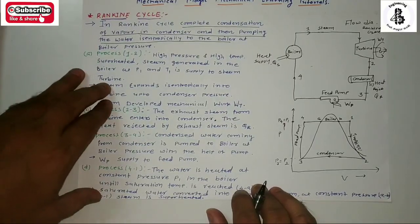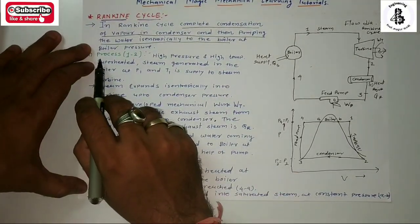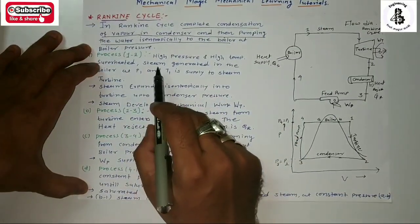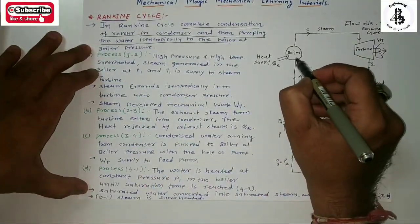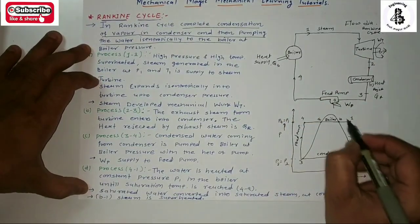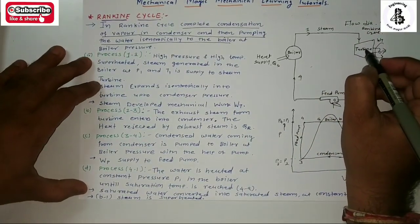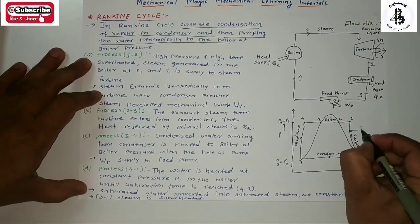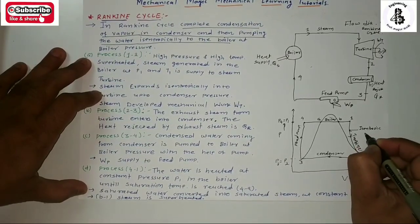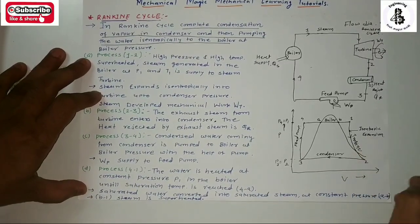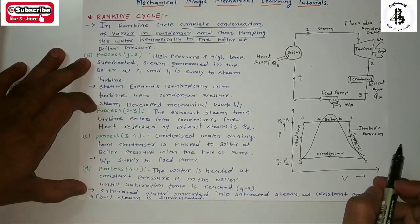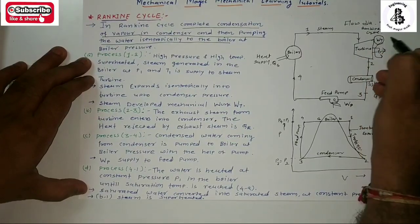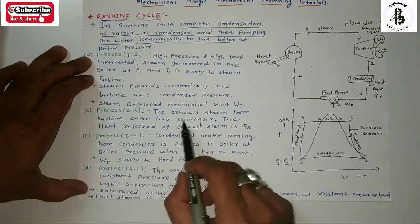In the condenser, the process occurs at constant pressure P3 equal to P2. With the application of the feed pump, the pressure increases. Process 1 to 2: high-pressure, high-temperature superheated steam is generated in the boiler at P1 and T1 and supplied to the turbine, where the steam expands isentropically down to the condensation pressure, developing mechanical work WT.